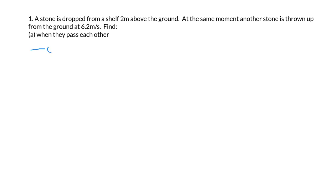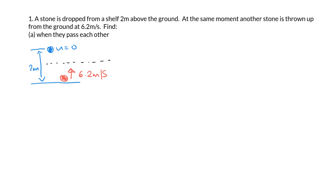So a nice simple diagram. There's our shelf, there's the ground, and this distance is two meters. The one that's dropped — remember, if something is dropped, its initial velocity is zero. The other stone is thrown up with an initial speed of 6.2 meters per second. We'll call the distance that it drops x.